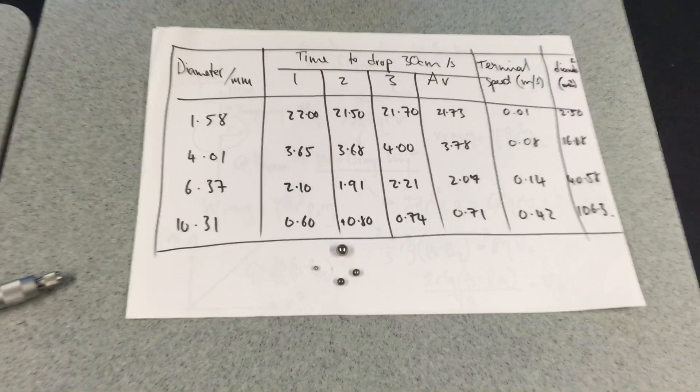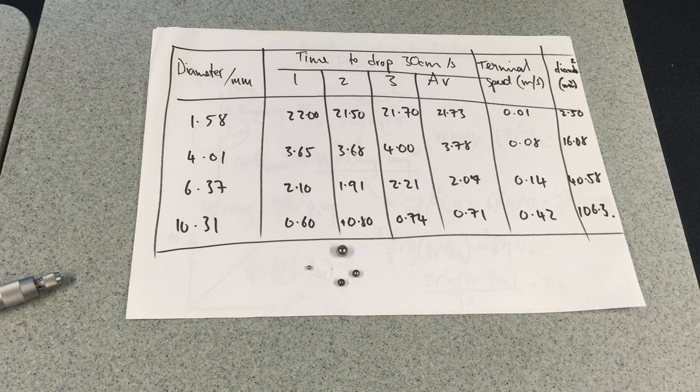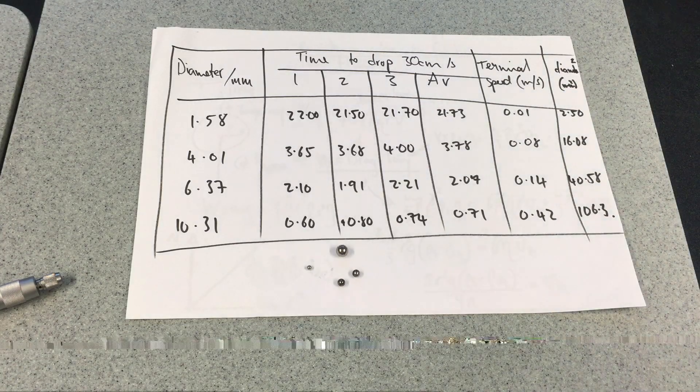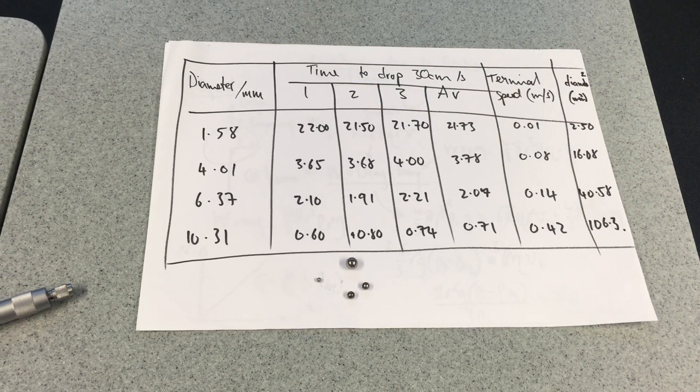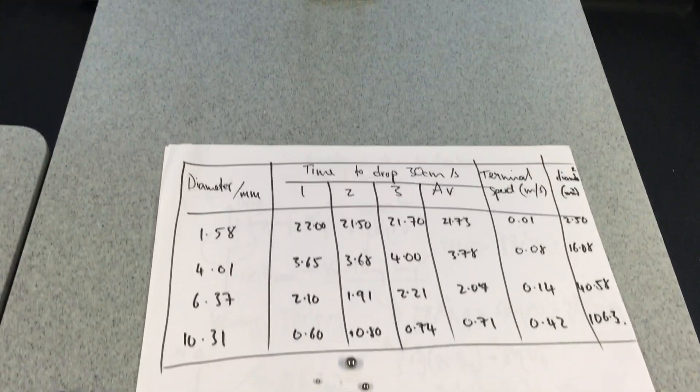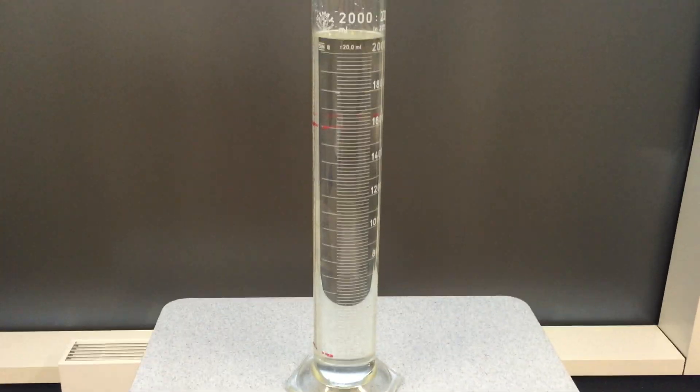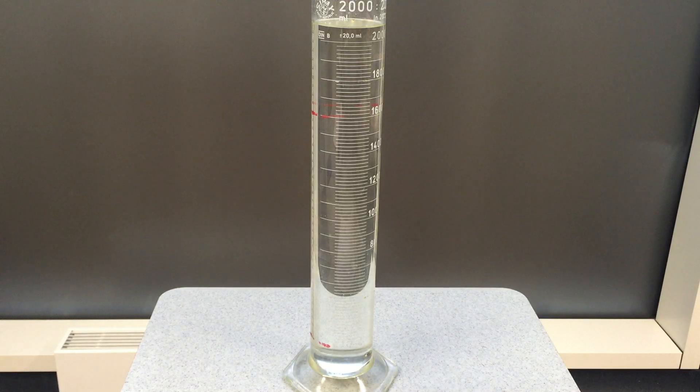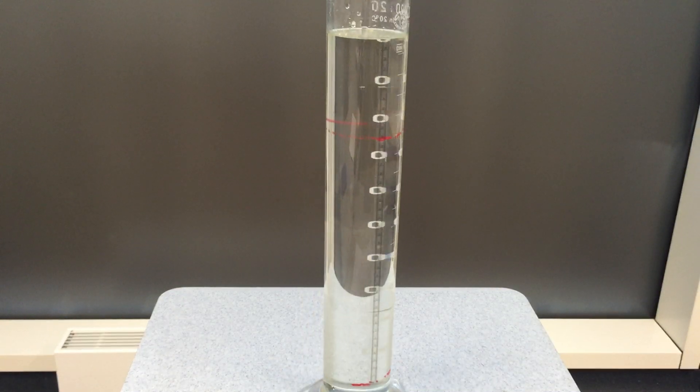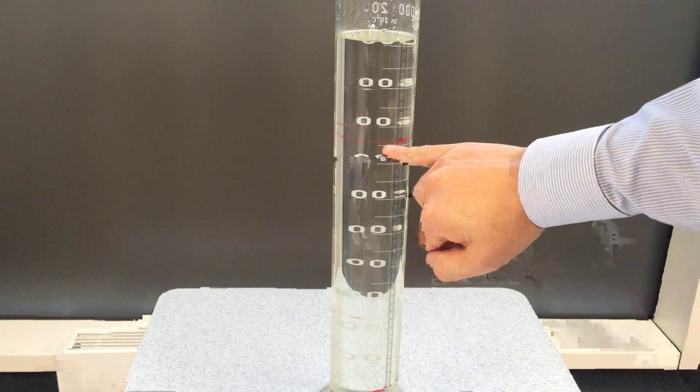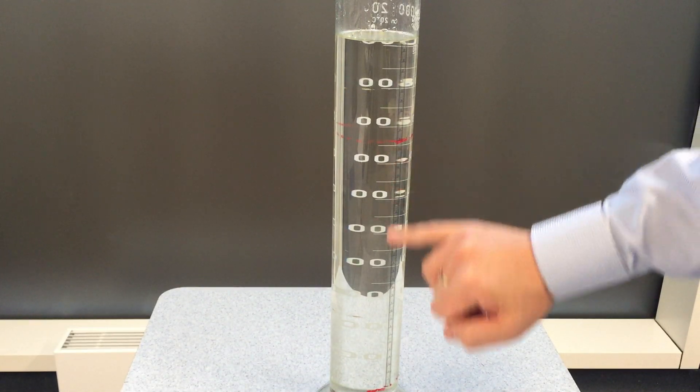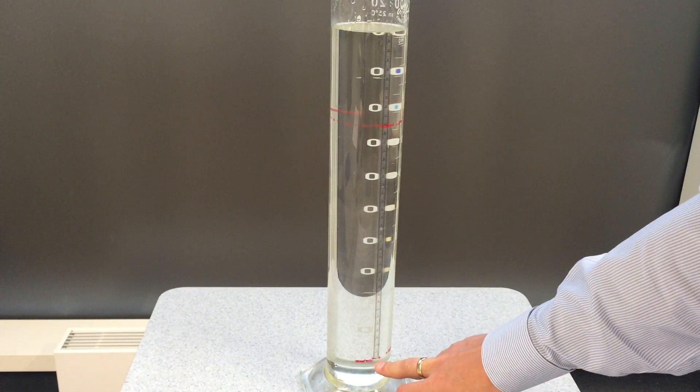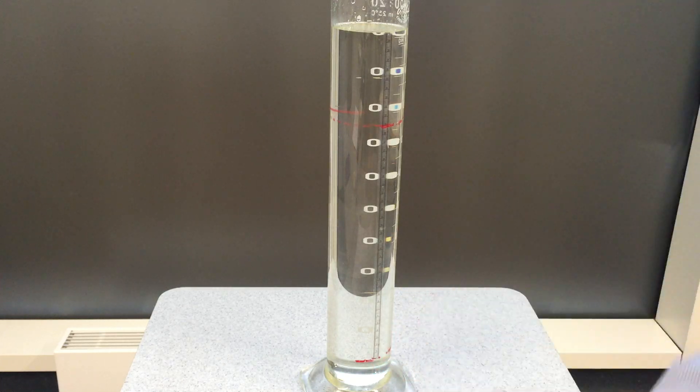We have marked out a cylinder of glycerine. What I've done is I've marked one red mark at a position of 30 centimeters, and there's another red mark right at the bottom at zero, and a nice scale down the side.